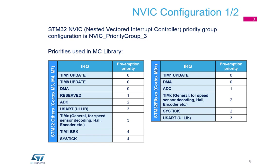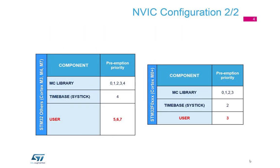DMA transfers data to the timers, then ADC converts results during the PWM cycle. USART is less critical but still at a fairly high level. Encoder and Hall sensor are not so time-critical. Break input comes at the end — it's an emergency input. The last one is SysTick, running at some frequency to control periodic tasks. A similar structure applies to the F0 family.